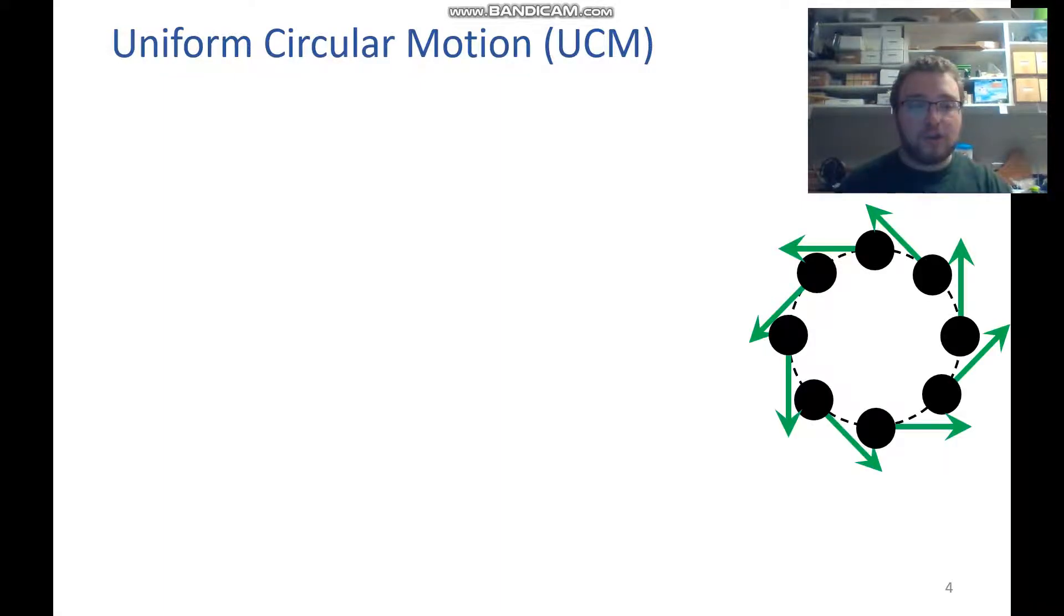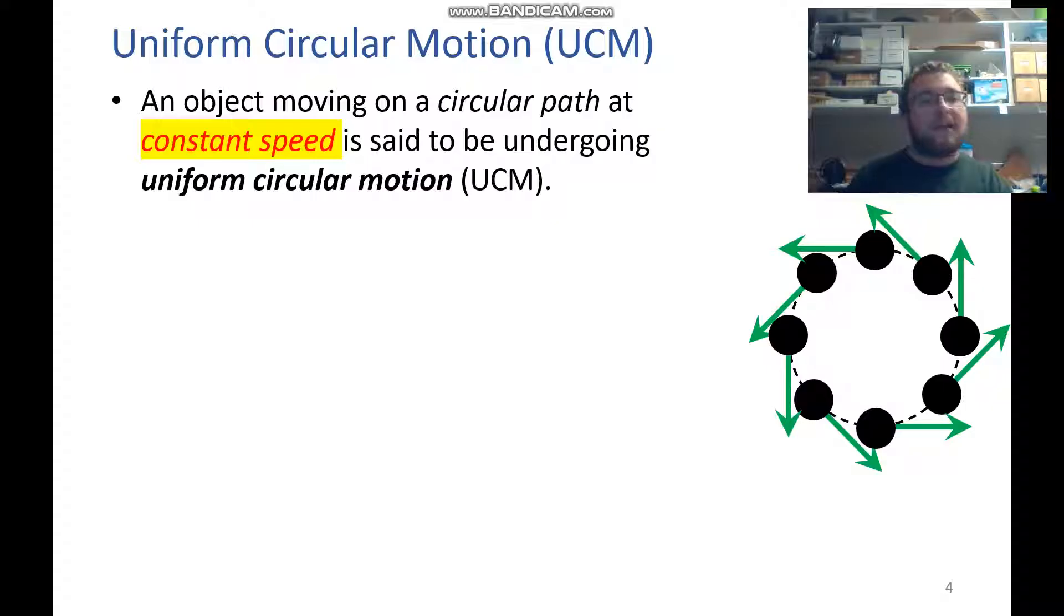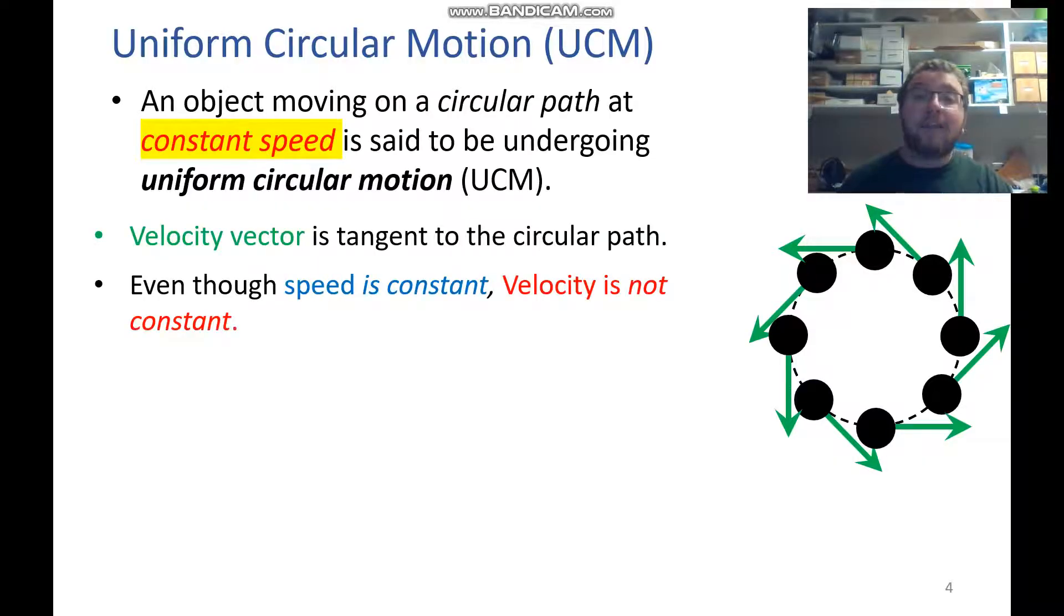So here we have another example of uniform circular motion. An object moving in a circular path at constant speed is in uniform circular motion. So the velocity vector again is always tangent to that path, and the speed is constant, but velocity itself is not constant.